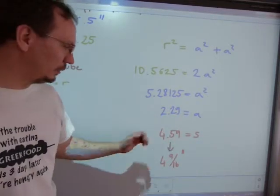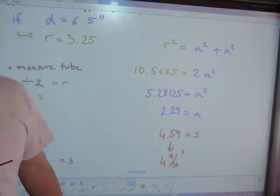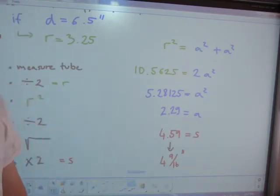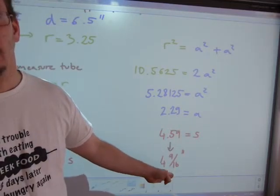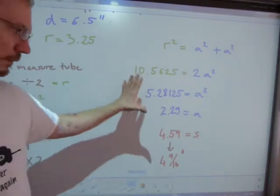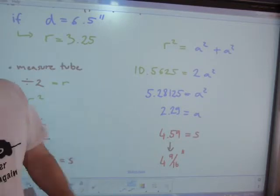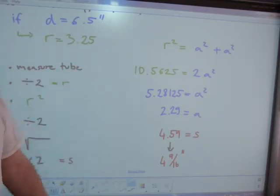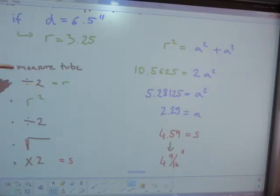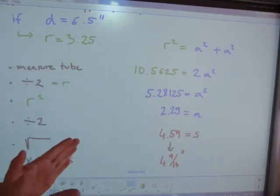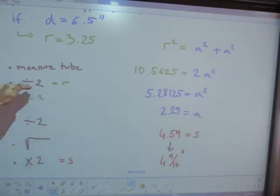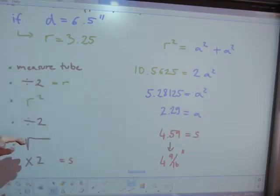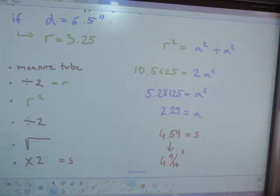Double it to get the side length: 4.59 inches. I converted that to something more recognizable — it's close to 4 and 9 sixteenths of an inch, a little more than 4 and a half inches but not as long as 4 and 5 eighths. So that's the size of the biggest post we can fit into a 6 inch nominal forming tube. The steps on this calculation: measure the tube, measure the diagonal through the imaginary middle, chop that in half to get radius, square that number, divide by 2, then square root that number. After square rooting, you double it and that gives you the side length.